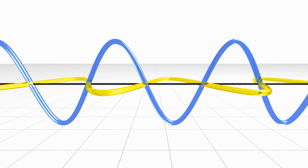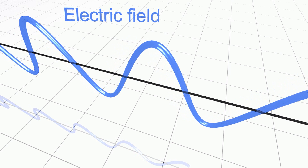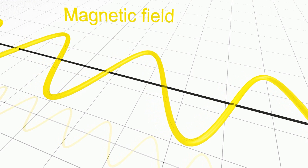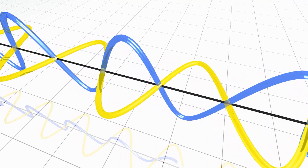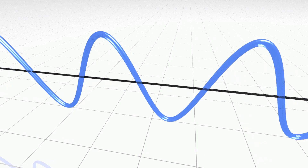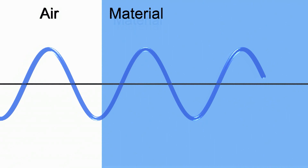Light has the character of a wave. A light wave can further be considered as an electromagnetic wave. The electromagnetic wave has an electric field component and also a magnetic field component, and these wave components are described by simple sine waves. In general optics, we consider only the electric field component of the electromagnetic wave.